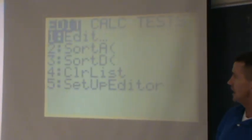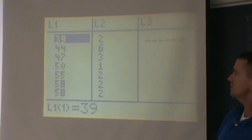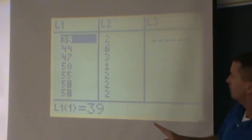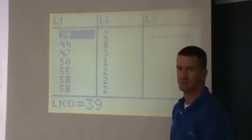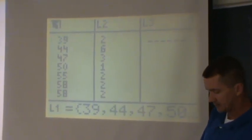So the first thing I go to is the stat button. And I'm just, see how it's highlighted in edit? I'm just gonna hit enter. And I wanna enter this stuff in L1 and L2, and whoa, hold up, there's already stuff in here. I don't want that stuff there, I wanna enter my data. So all I have to do is hit the up arrow, and then I'm gonna hit the clear button.